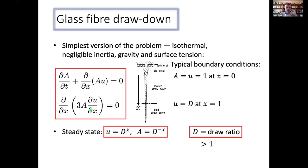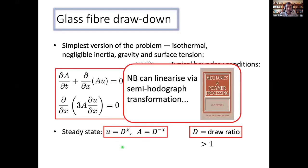And in the steady state, it turns out you can actually integrate these equations quite easily. And you just get that the velocity and the area are both exponential functions of the distance along the fiber. Okay, so that looks straightforward. Now, John Ockenden asked me to mention this. So John and some co-workers showed that actually this nonlinear system of PDEs, you can linearize. You can transform it into basically a linear hyperbolic PDE, a bit like the telegraph equation.